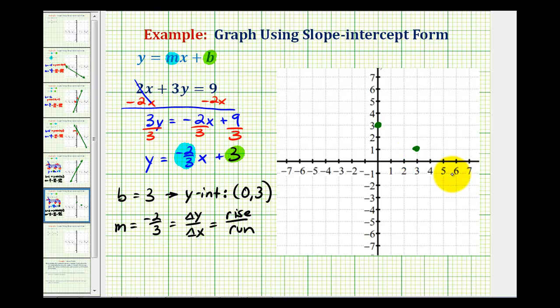Down 2, right 3. And the graph of our line passes through these points.